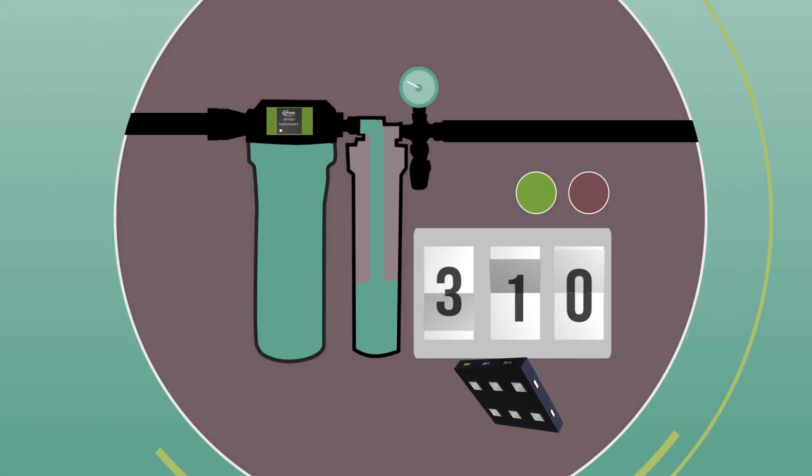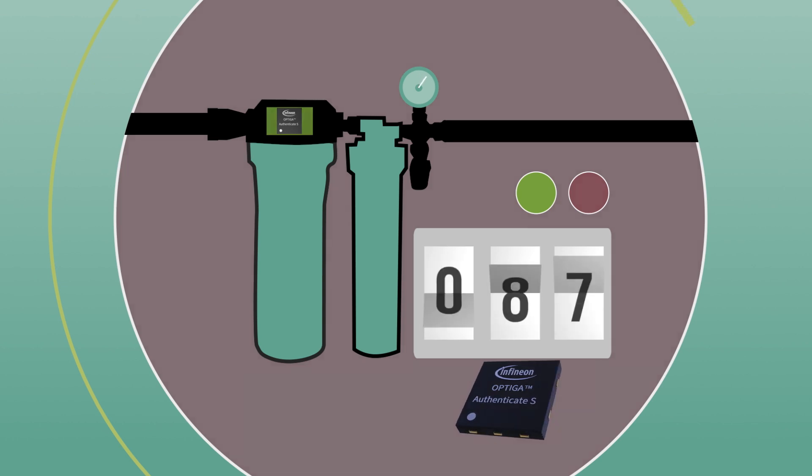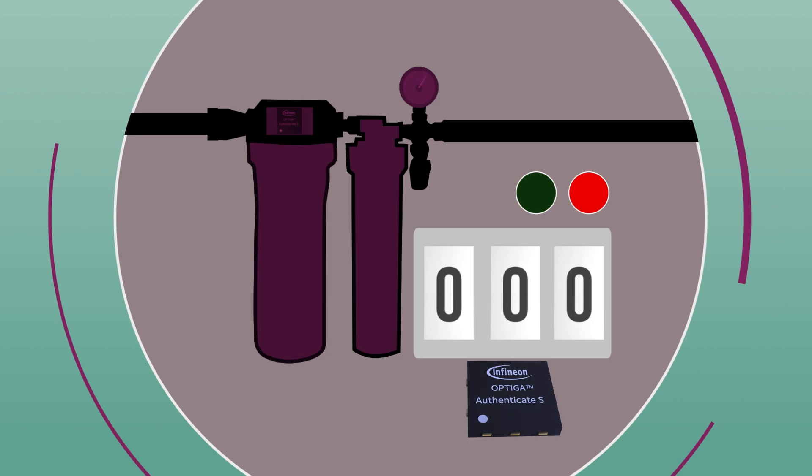Optiga Authenticate S also integrates secure decrement lifecycle counters with independent deactivation structures that allow products like filters and batteries to be used for a safe, predetermined or monitored number of cycles.